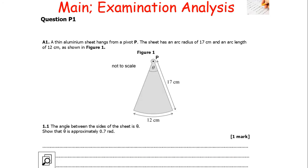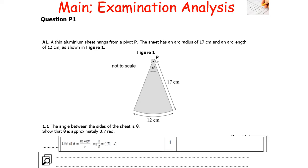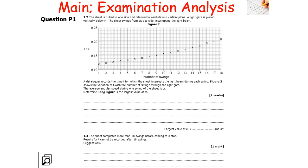A thin aluminium sheet hangs from pivot P with an arc radius of 17 cm and an arc length of 12 cm. The angle between the sides θ is approximately 0.7 radians. We use θ = arc length / radius = 12/17 = 0.71 radians.